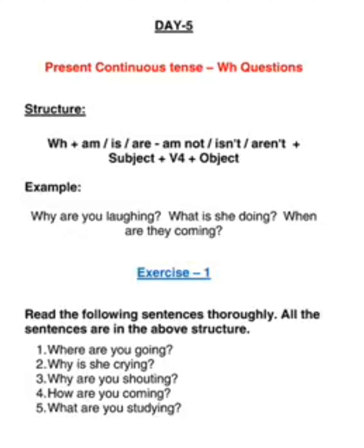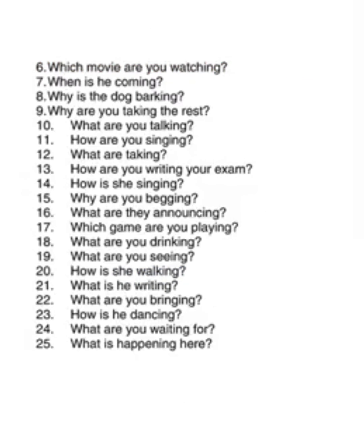So for WH questions, before the question you have to keep the WH. Number 6: Which movie are you watching? You should not say 'you are watching' — you should say 'are you watching,' as it is written there. Number 7: When is he coming? Number 8: Why is the dog barking? Number 9: Why are you taking the rest? Number 10: What are you talking? Number 11: How are you singing? Number 12: What is he taking?